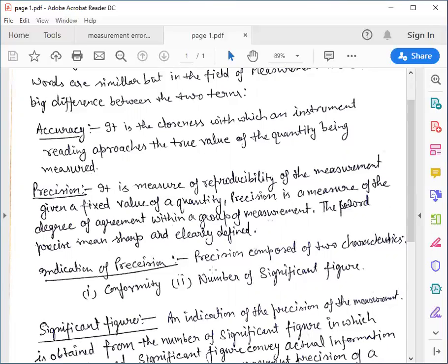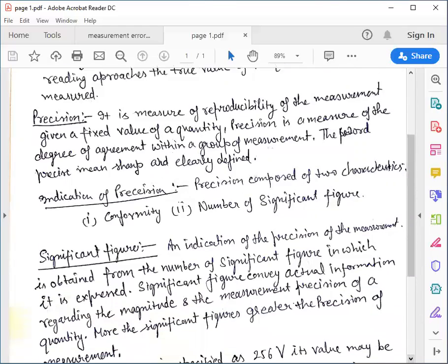Indication of precision is composed of two characteristics: conformity and the number of significant figures. Now we will discuss the significant figure. What is the significant figure?